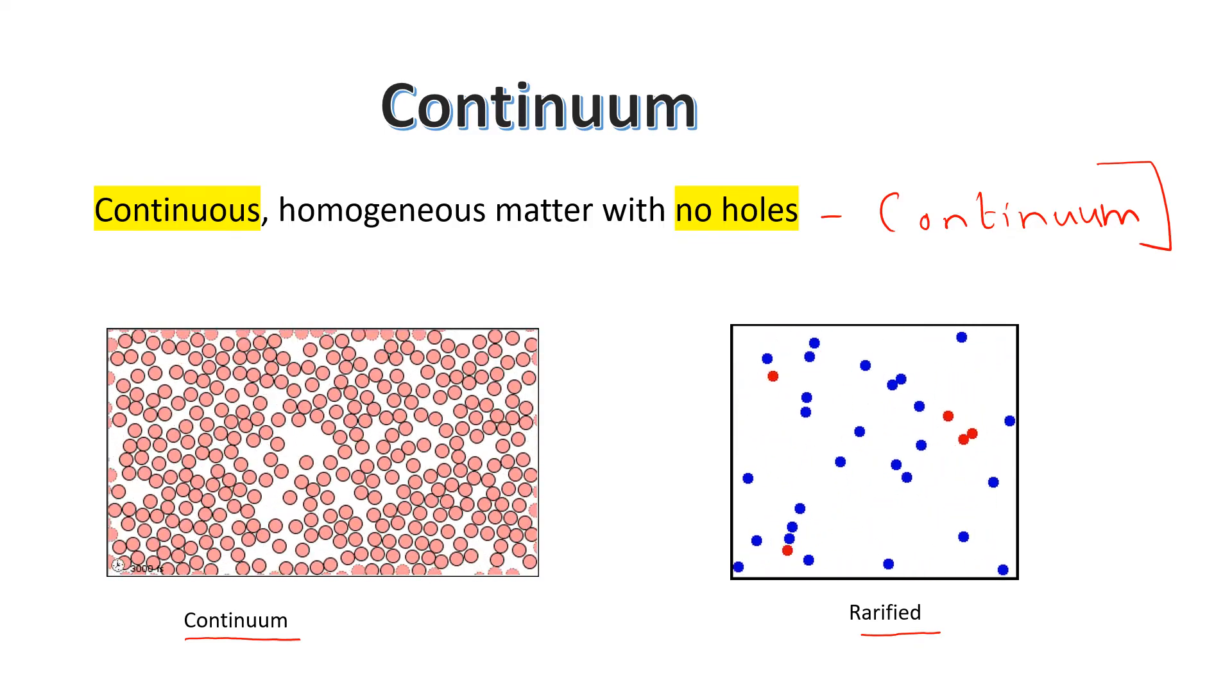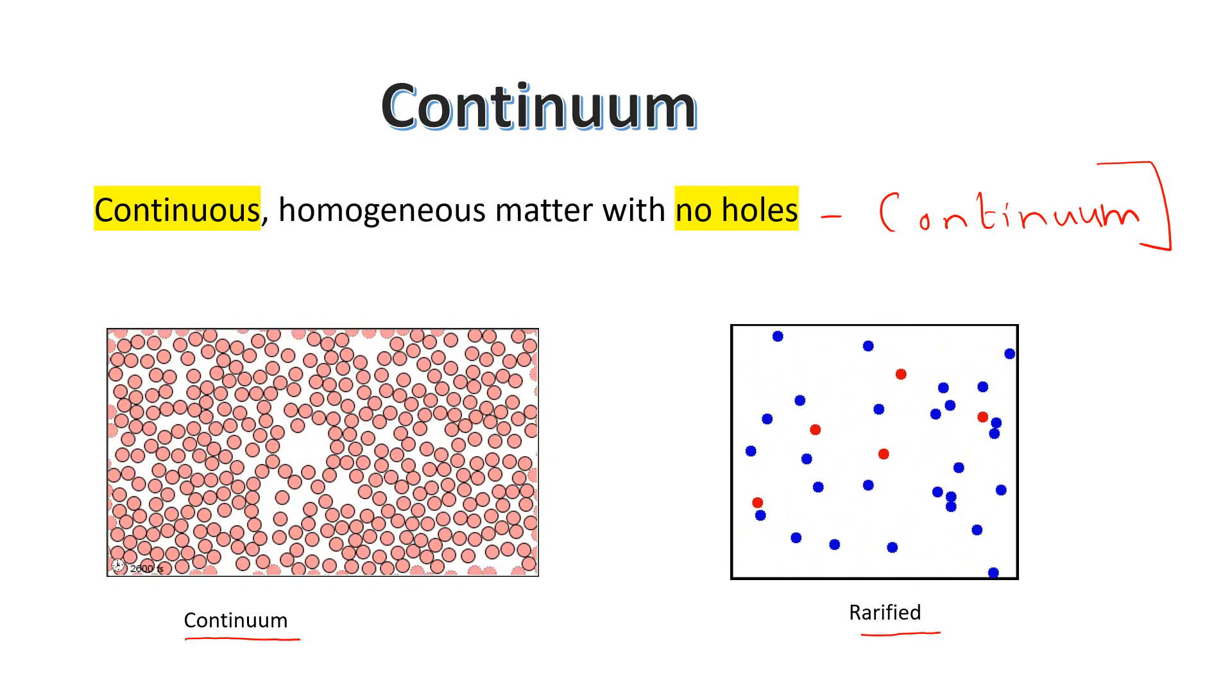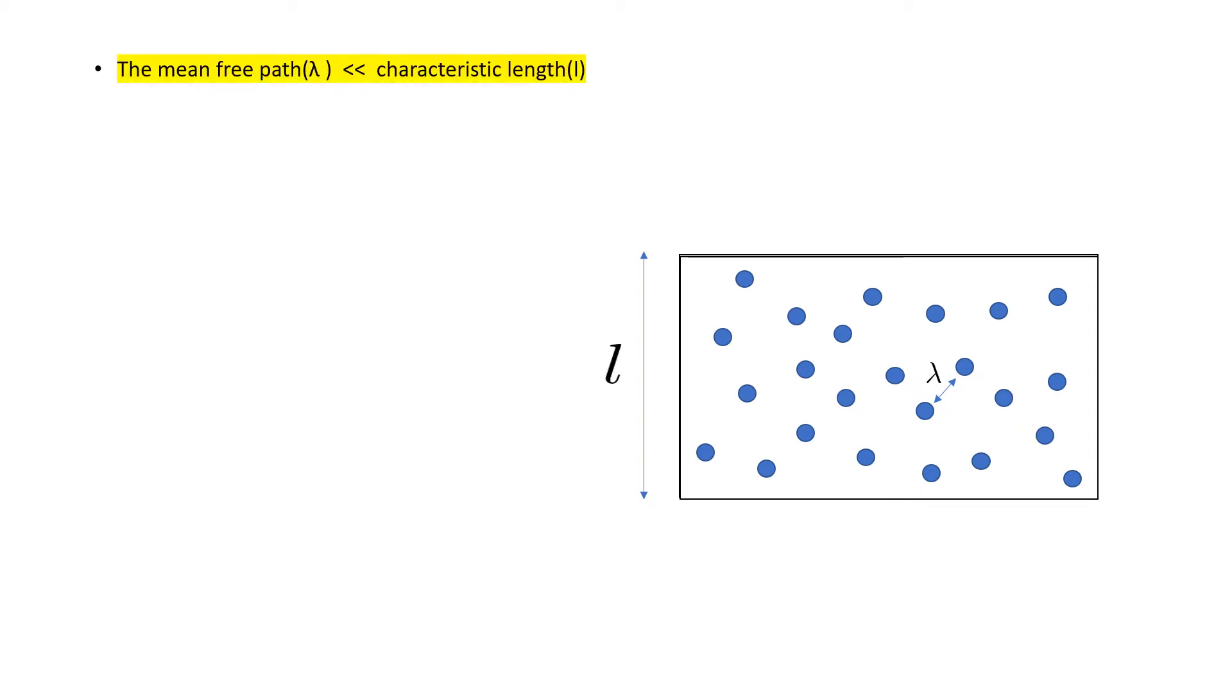So how do you make a classification between continuum and rarefied gas? The continuum model is applicable as long as the mean free path is much lower than the characteristic length. Mean free path is the distance traveled by the molecules between two successive collisions.